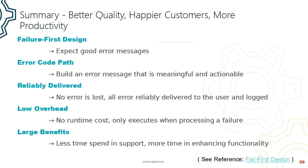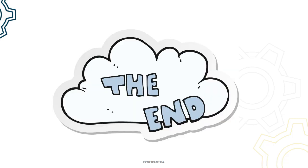So in summary, this approach of fail-first design: you start by expecting a good error message. You use the error code path to build a message that's meaningful, which is then reliably delivered with low overhead. The benefits are that you spend less time supporting users and more time enhancing functionality. Thank you very much.